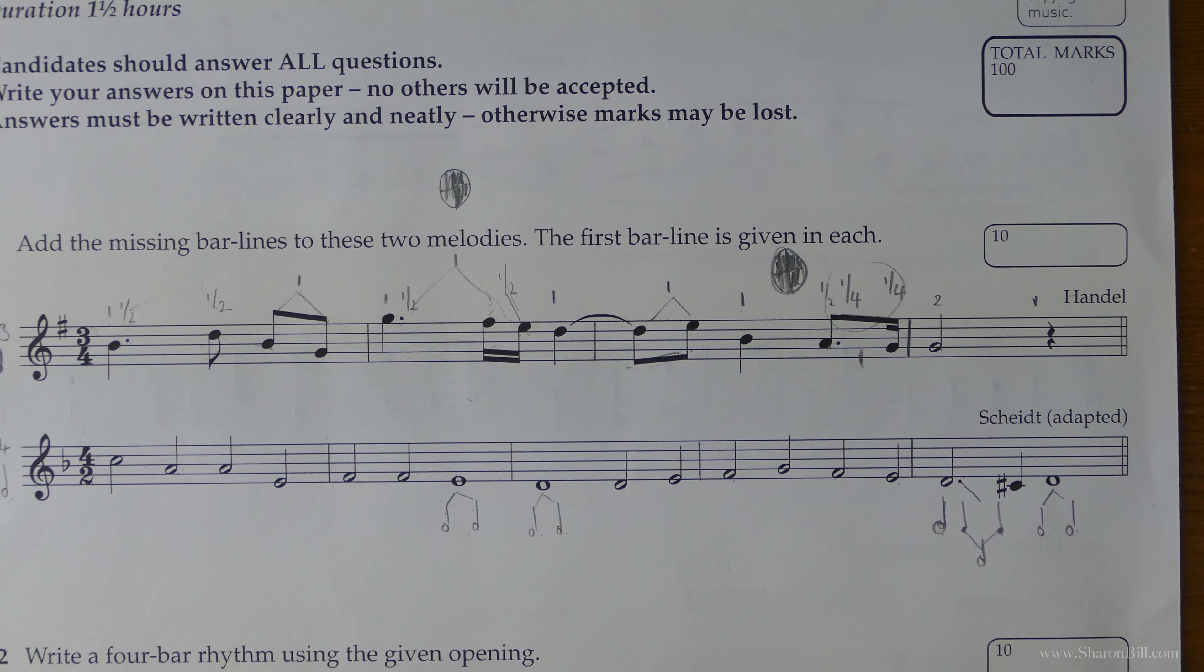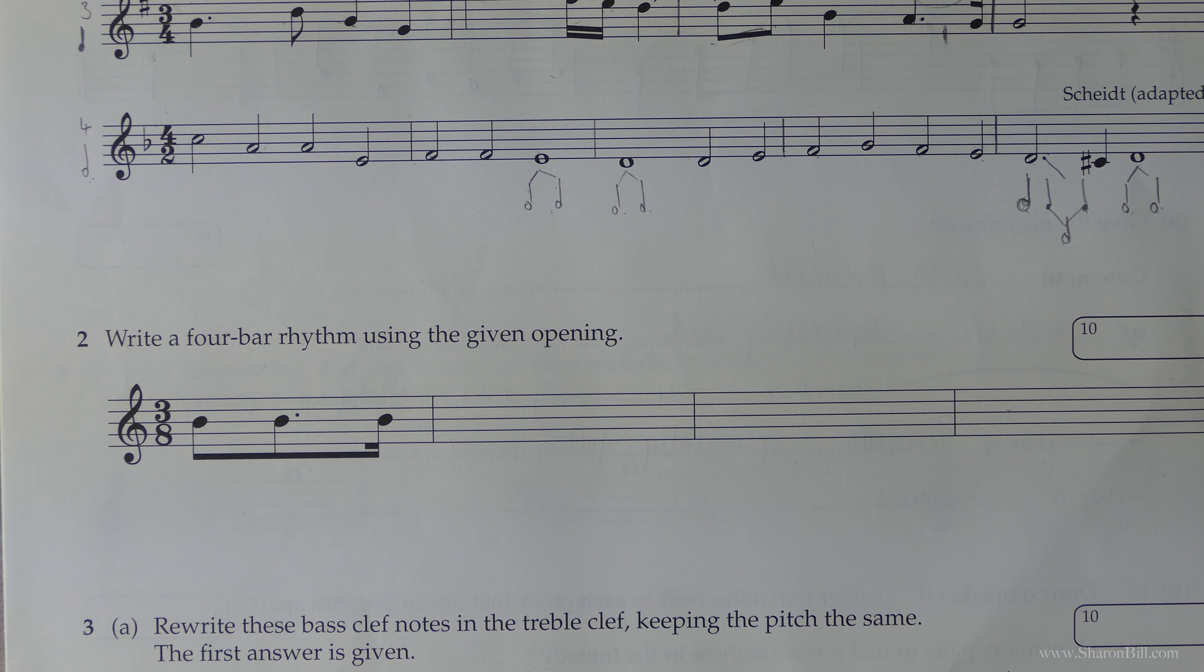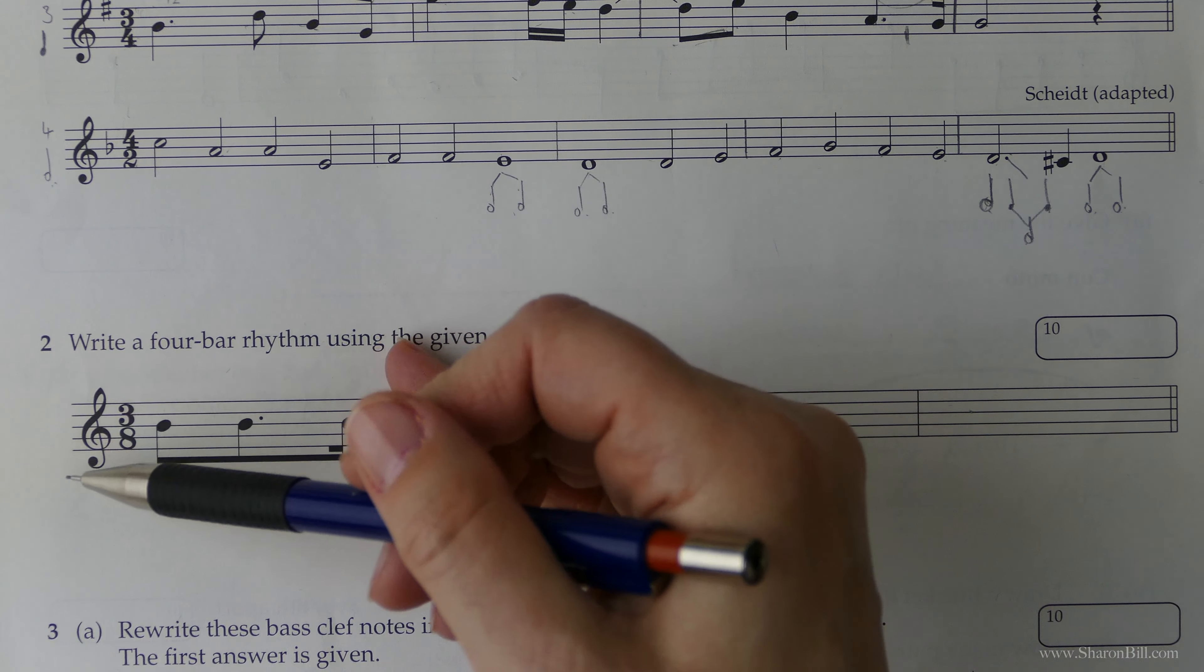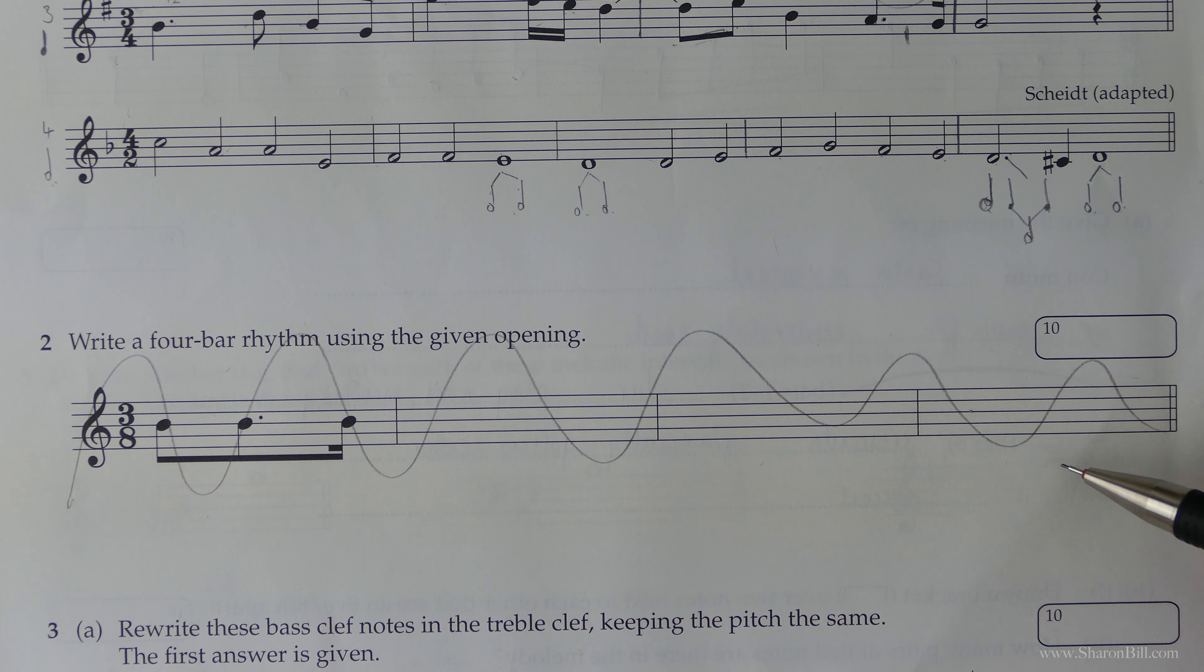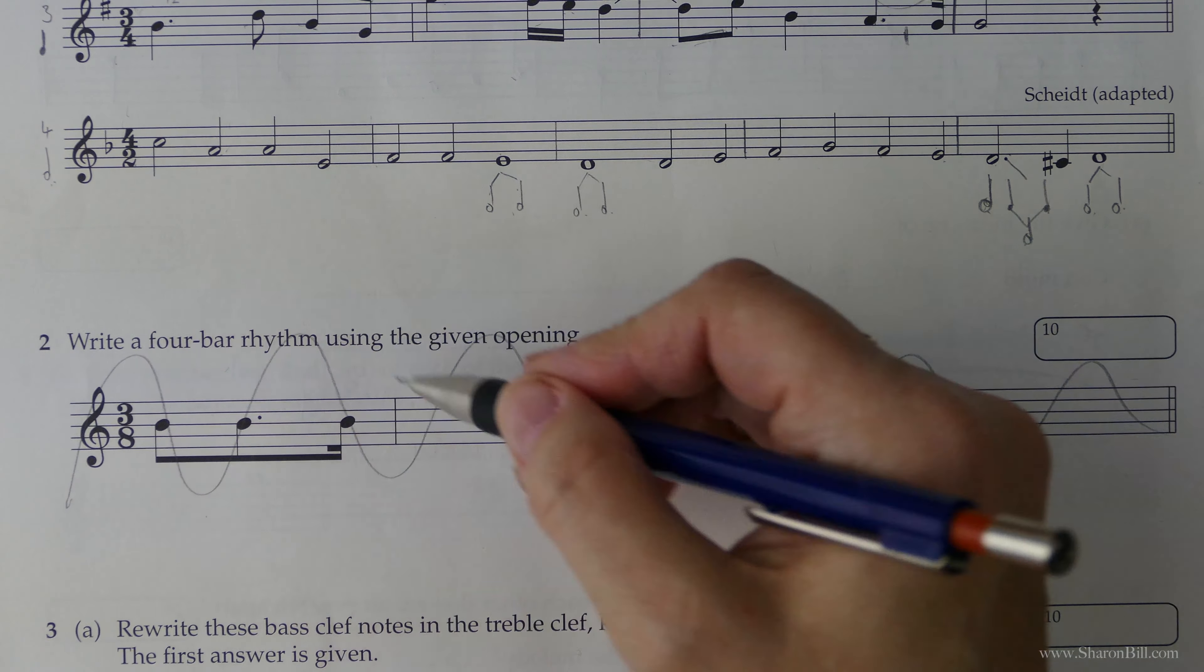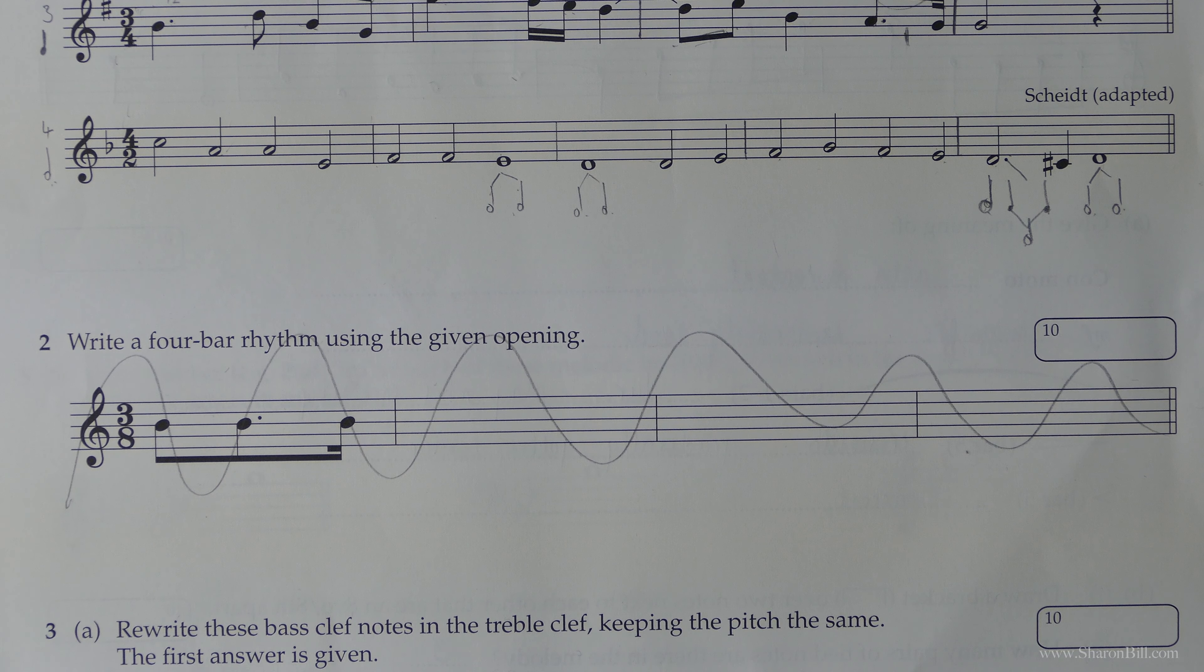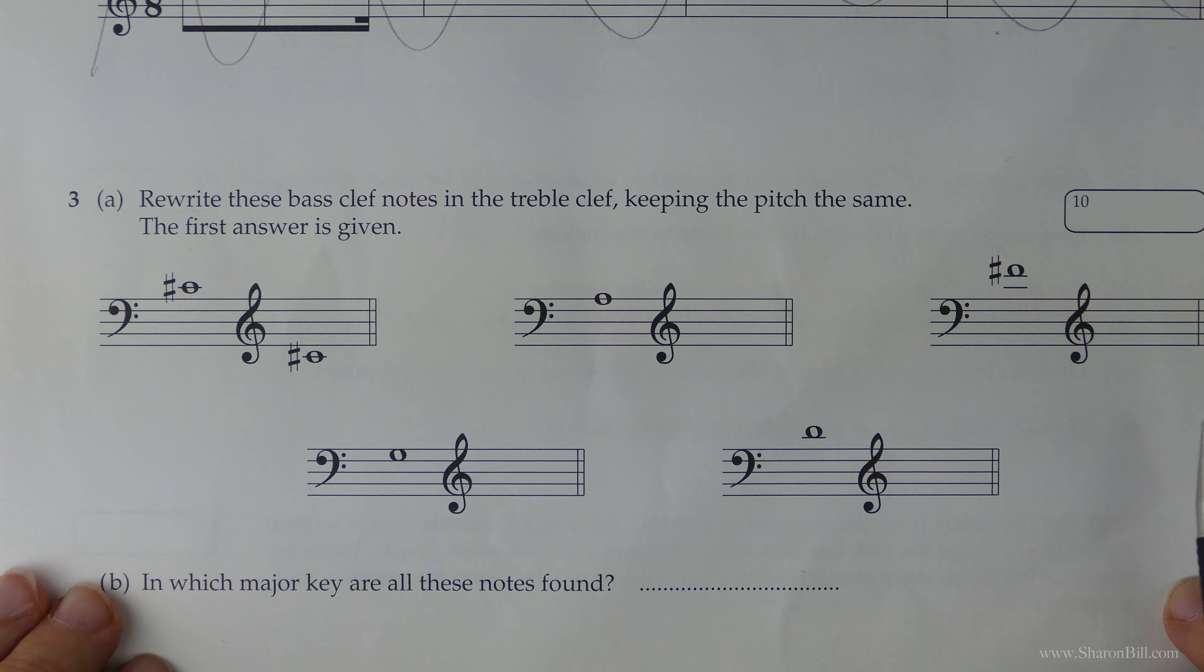So that's that one completed. Now question two, this is the first example of where the layout of the exam paper has changed and from 2018 onwards there is no longer a question that asks us to write a four-bar rhythm so we can just skip that. However, the rest of the paper provides a really really valuable revision resource so just because we're not answering that question it doesn't matter, it's still really helpful to go over these past papers just for some revision and preparation for your exam.